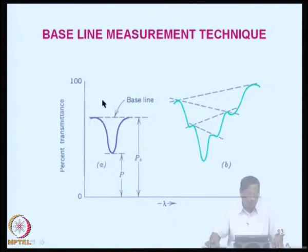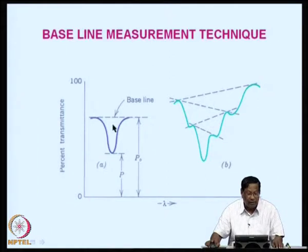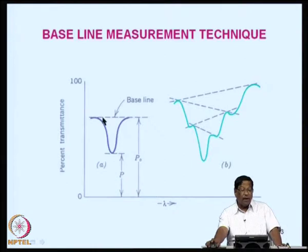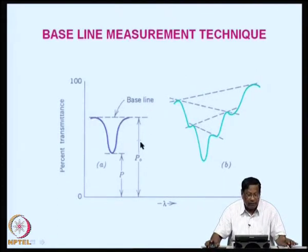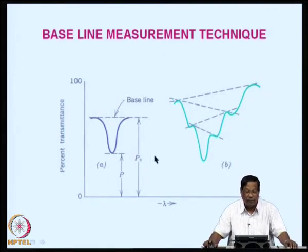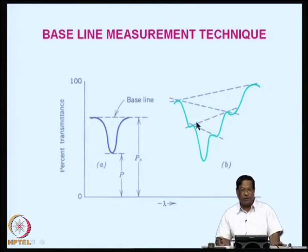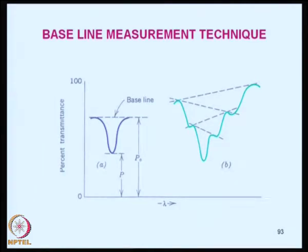An IR peak is shown here as percent transmittance versus wavelength. The total transmittance is P0 and the transmitted value is P. The difference is absorbed. You draw a baseline tangent, measure the peak area, and determine the concentration. If you have different concentrations of the substance, it is possible to prepare a calibration curve for different concentrations and plot peak area or absorbance to determine quantitatively the amount of sample present.